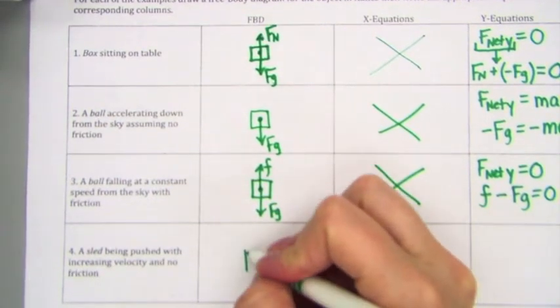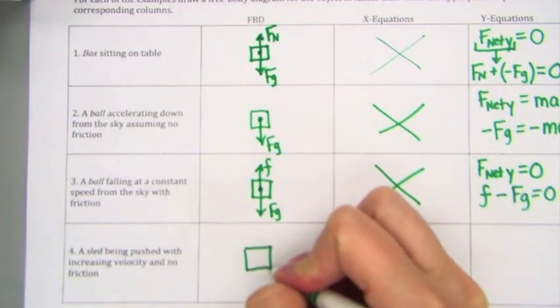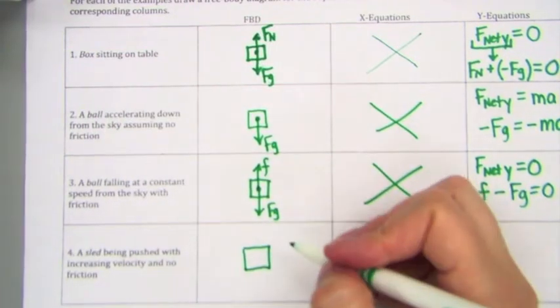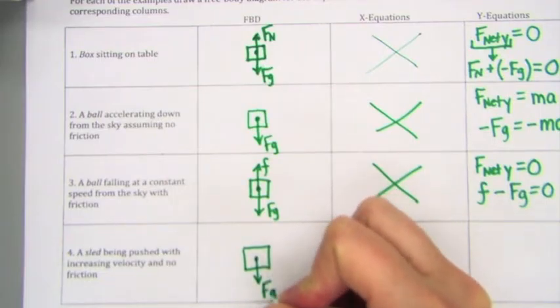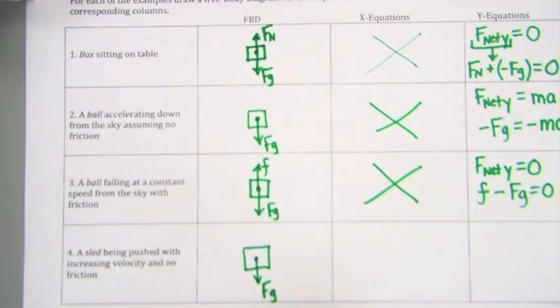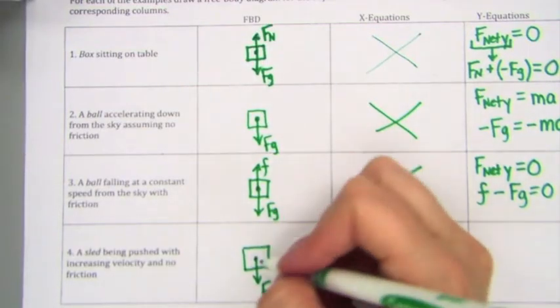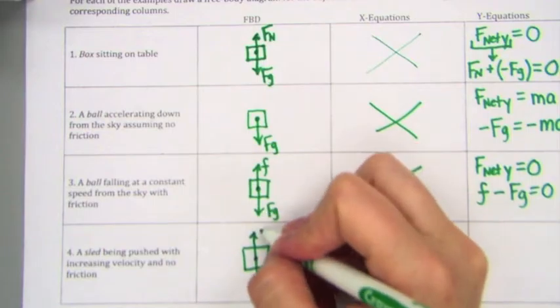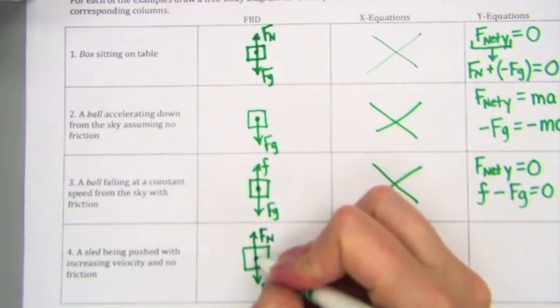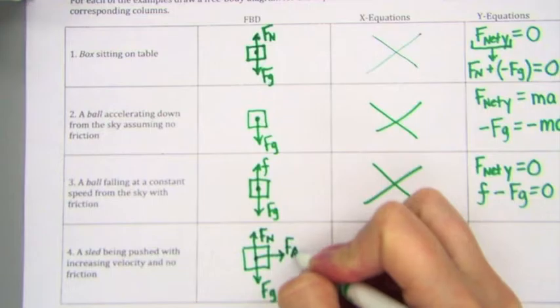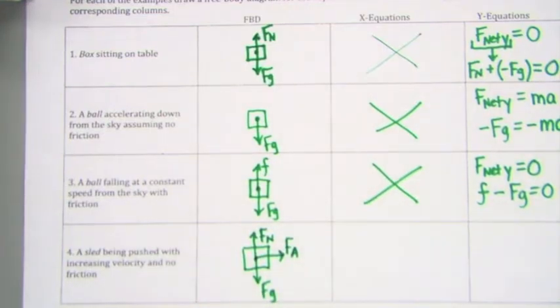Okay. Now, we can try an object that is moving horizontally. Finally, we always start by drawing gravity. Is the object on a surface? Yes. I hope a sled that's being pushed is on a surface. Because it says the word push, I know it has an applied force. It tells us in the problem, no friction. So I don't have to draw any other forces acting on the object.